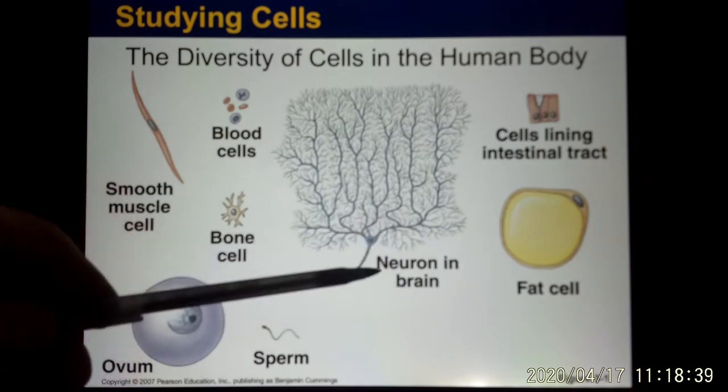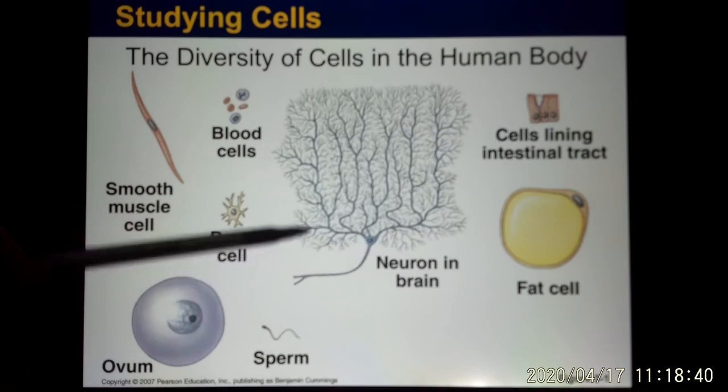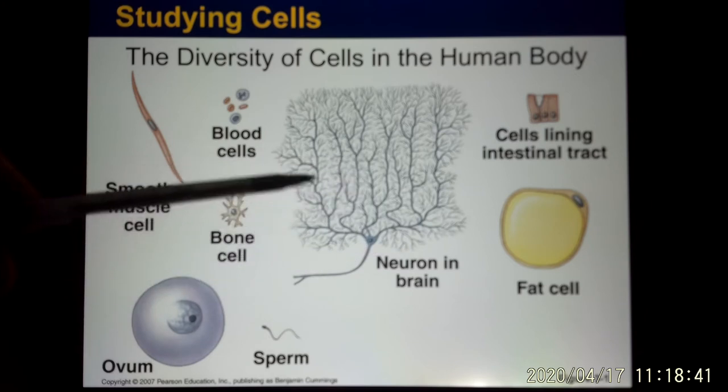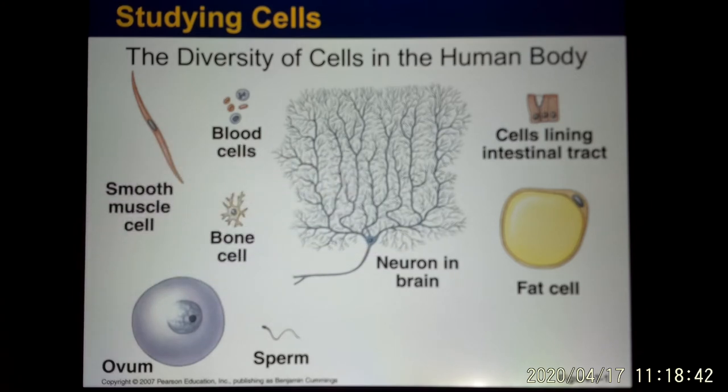This is the neuron — this is the cell in the brain. They look very complicated because they are ready to create a neural network.